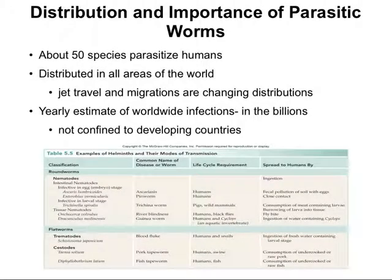Parasitic worms have a huge distribution. There are about 50 species that are parasitic to humans, distributed in all areas of the world. Many that were geographically restricted have acquired higher distribution areas because of jet travel and migrations. The yearly estimate of worldwide infections is in the billions, and it's not just confined to developing countries. The table below summarizes several of the important helminths we'll consider throughout this semester.